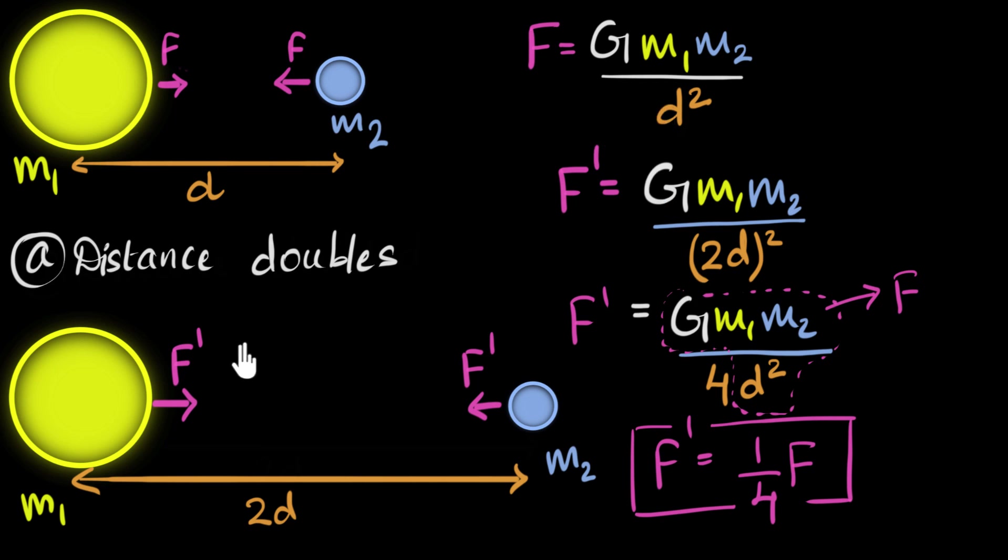Now, can you try one? What do you think will happen if the distance were to triple? So just pause the video and give it a shot. Well, if the distance becomes triple, this number would be three. And as a result, over here, we get a 3D squared. And so, three squared will become nine. And as a result, our new force will be one ninth of the initial force. That means the force would reduce and become one ninth.